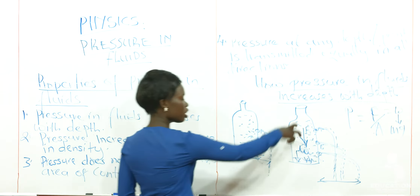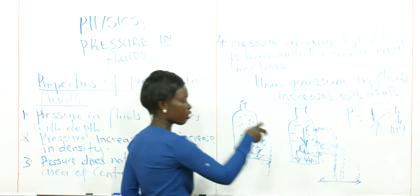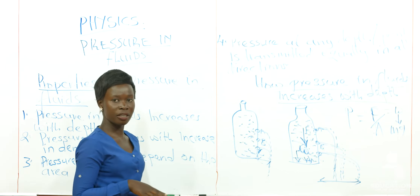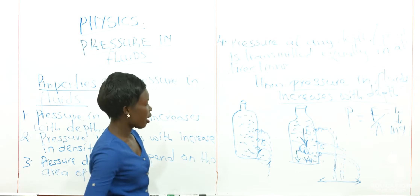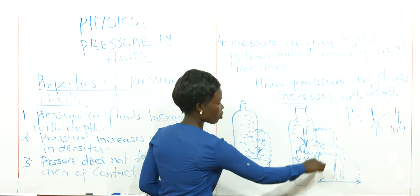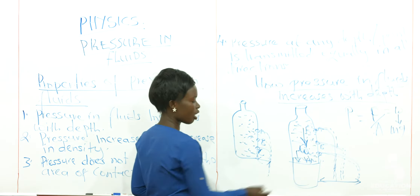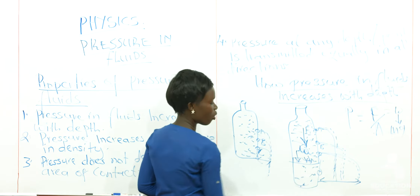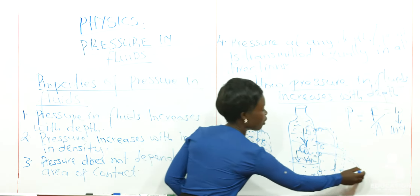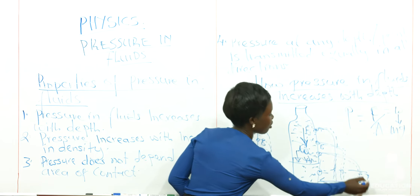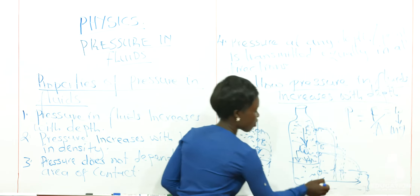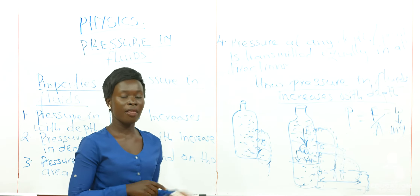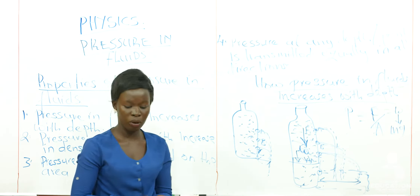That is how pressure in fluid increases with depth — the more deeper you go, the pressure exerted also increases. So if you increase your bottle to a greater height, the liquid being up higher means that if you make another hole, the jet there will be even further from the bottom than before. So the more you go down, the deeper you go, the higher the pressure will be.